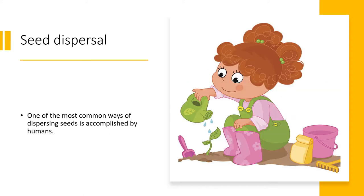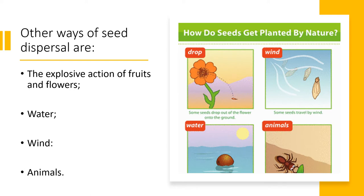Seed Dispersal. One of the most common ways of dispersing seeds is accomplished by humans — they take the seeds from one plant, put them in dirt, and try to grow new plants. Other ways of seed dispersal include the explosive action of fruits or flowers, water, wind, and animals.